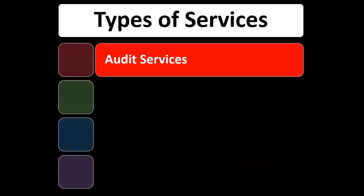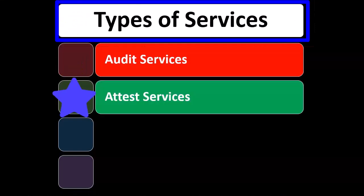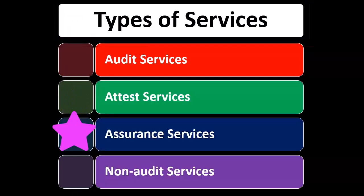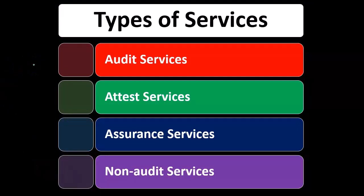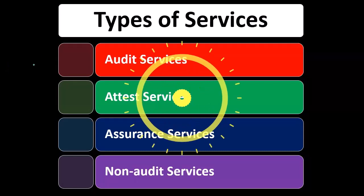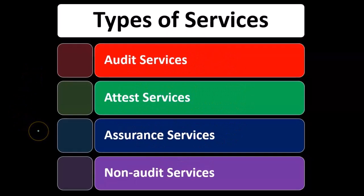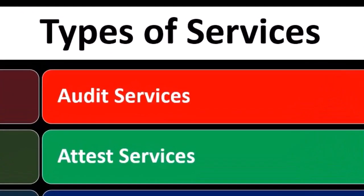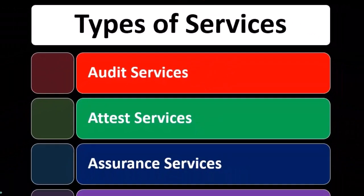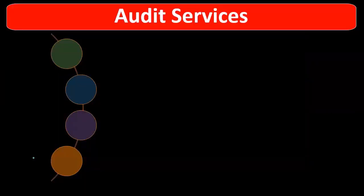Types of services typically include audit services, attest services, assurance services, and non-audit services. We talked in some depth in prior presentations about the difference between these items and the overlap between audit services, attest services, and assurance services, and then basically the non-audit type of services as well. These are what the CPA firm will typically do, and we'll go into a little more depth on some of these items here.